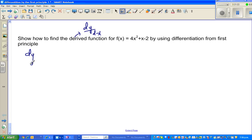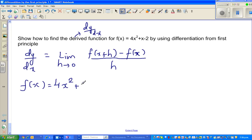So let me write the first principle. dy by dx, the first principle is the limit when h approaches 0 of f of x plus h minus f of x over h. So what is our f of x? f of x is 4x squared plus x minus 2.